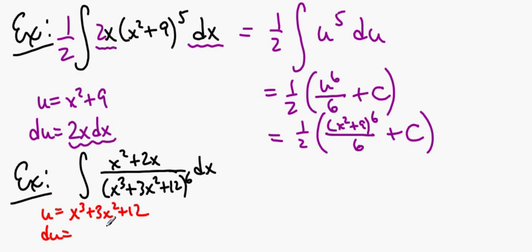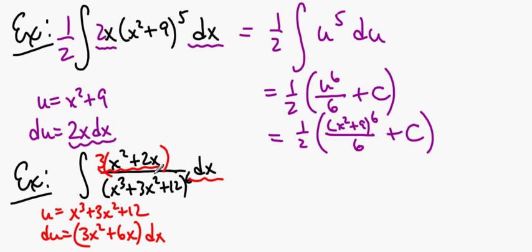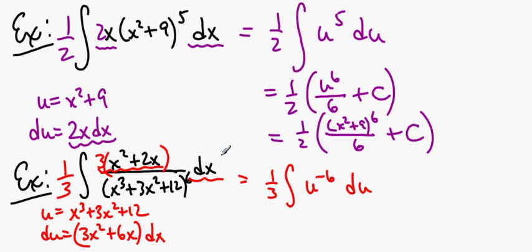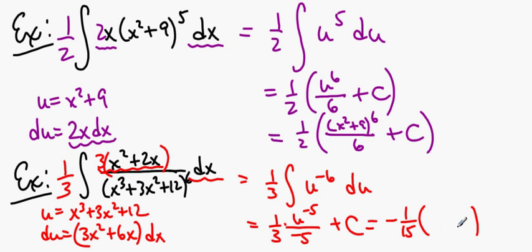How do we know if it's a good u? We take the derivative and ask: is that derivative hiding somewhere? And we say — almost. It would be hiding there if we multiplied by 3, so we compensate. And what have we got? We've got 1/3 times the integral of u to the negative 6 du. So: increase the power by 1 and divide by the power. Then we substitute back, and this is negative 1/15 times (x³ + 3x² + 12) to the negative 5th plus a constant.